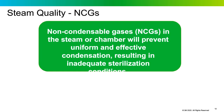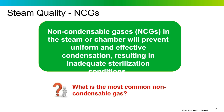Non-condensable gases can prevent uniform and effective condensation of saturated steam, resulting in inadequate sterilization. The most common non-condensable gas is air leaking in. Potential sources include inadequate air removal in the sterilizer, air leaking through valves or gaskets, gases trapped in the supplied steam, or boiler water that hasn't been adequately de-aerated. Think of air as the enemy of steam sterilization.